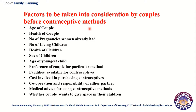So it was all about the definition of family planning, the objectives of family planning, and the classification of family planning methods, as well as the different factors to be taken into consideration by couples before contraceptive methods. In our coming lectures, we will discuss in detail all about these different methods used for controlling birth and why we should adopt different family planning methods for the welfare of the family. Nowadays, the broad term used is family welfare, as the family consists of husband, wife and children, all dependent on each other.